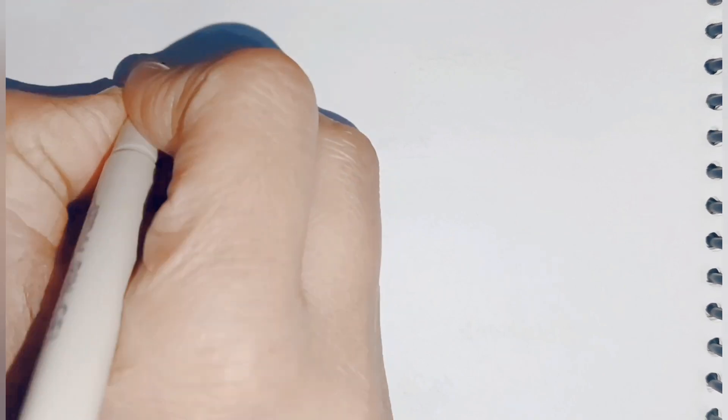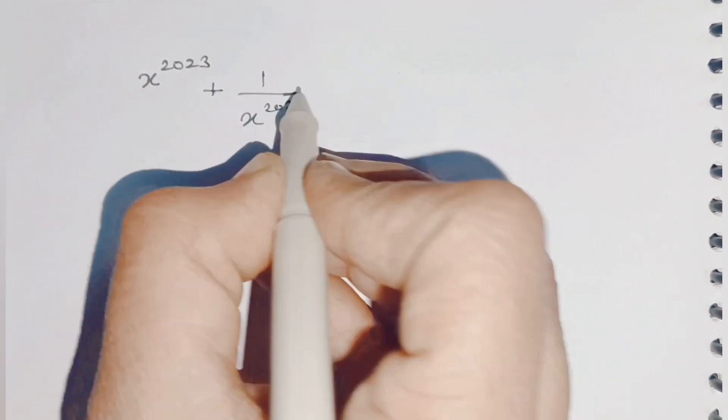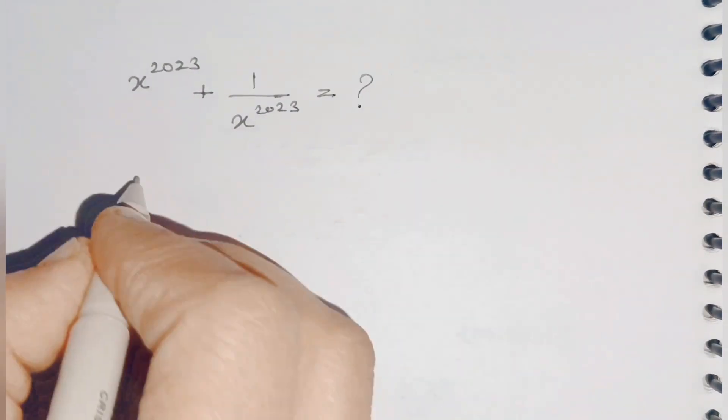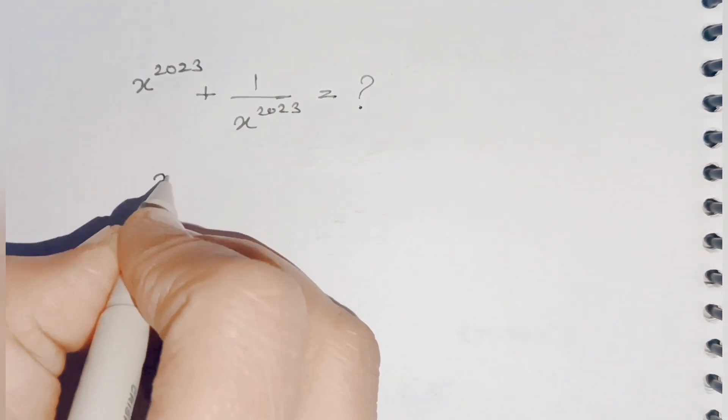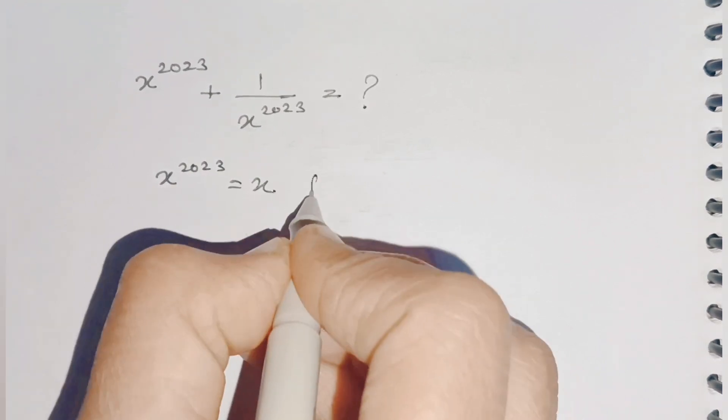Let's write the expression which we have to calculate: x^2023 + 1/x^2023 equals how much? Just now we calculated the value of x^2023, which is equal to x from our previous calculation.